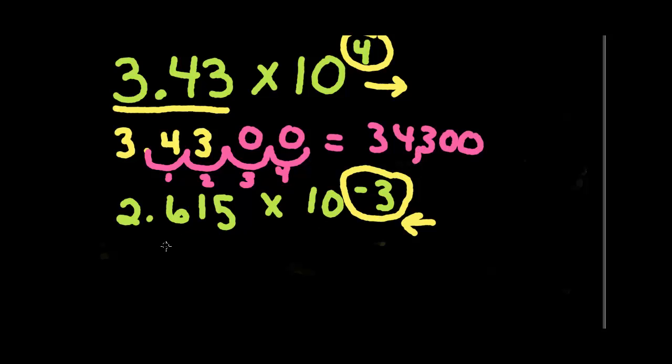The next one is 2.615. And now we need to move three places, but this time we're going to move to the left. The same thing. If there's a number there, we move by it. If there isn't, we put a placeholder in.